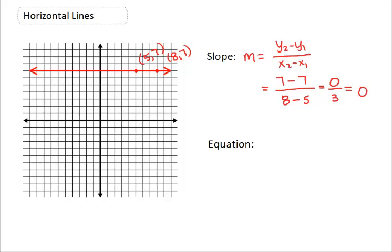I randomly picked two points on this randomly picked horizontal line, but I could have done this with any horizontal line and any two points on that line. So the slope of horizontal lines will always give you 0.